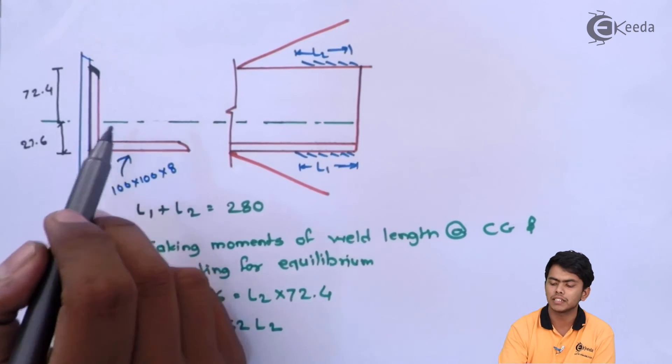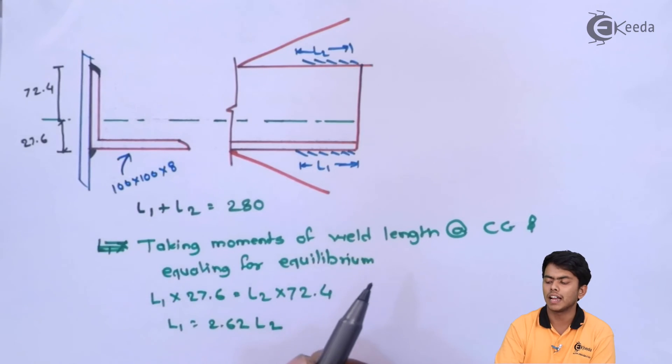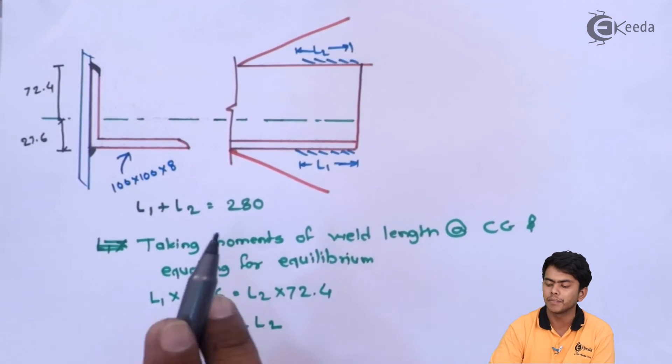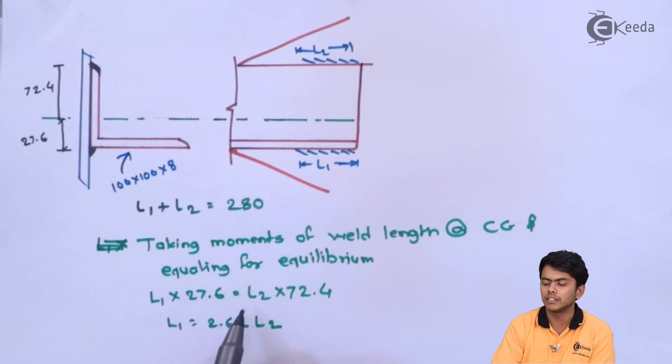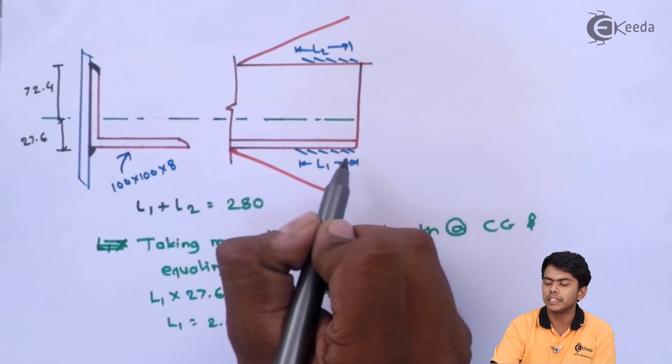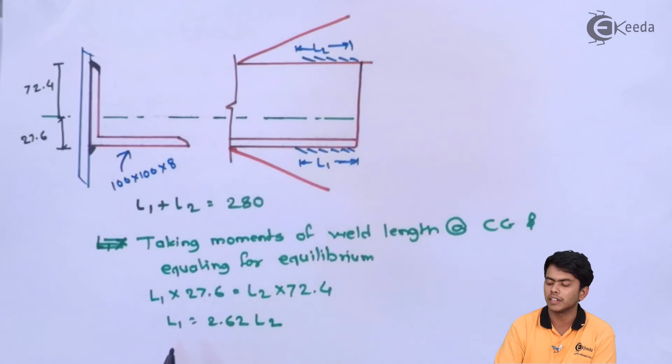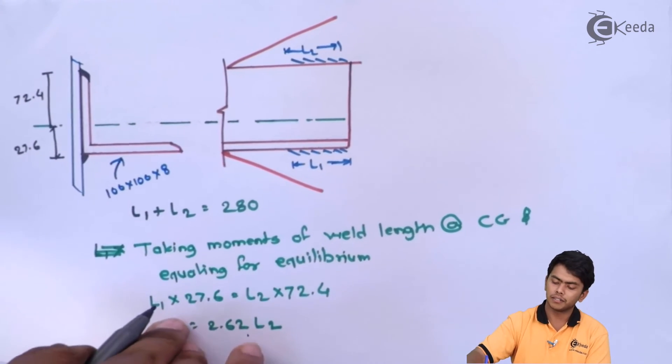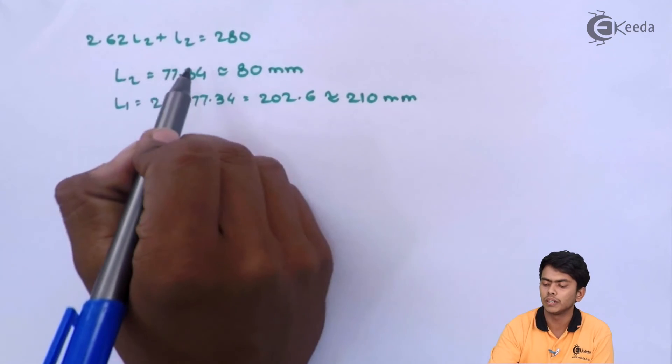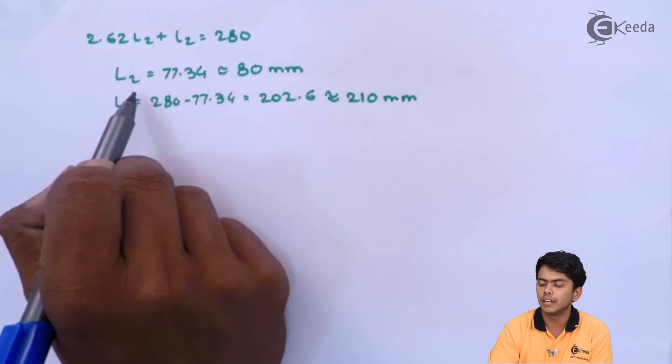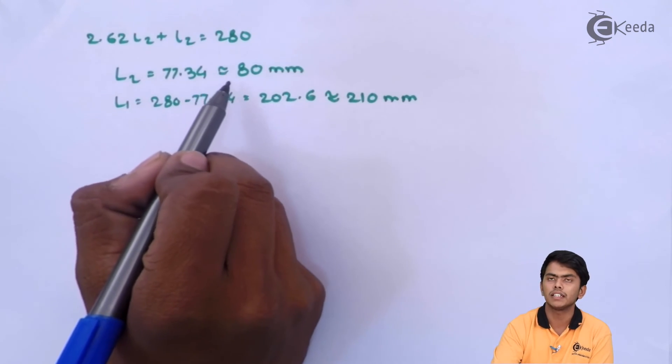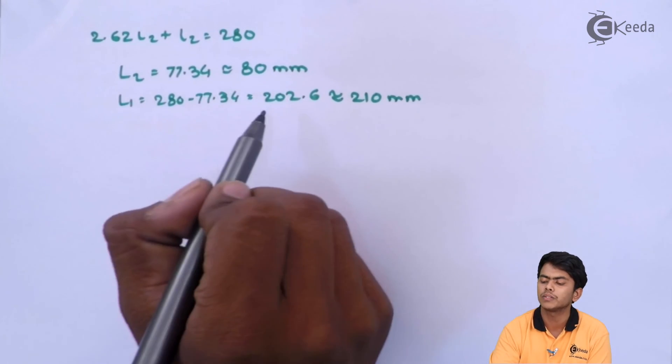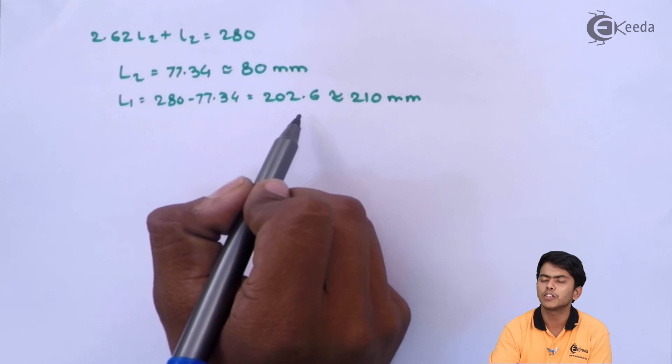This angle is not equal, so we will match the CG. We will take moments of weld length at CG and equate for equilibrium. So we will get L1 into 27.6 equals L2 into 72.4. We will get L1 equals 2.62 times L2. Round off to 80 mm for L1, then L2 equals 280 minus 77.34, which is 202.6 mm, round off to 210 mm.